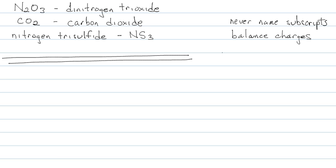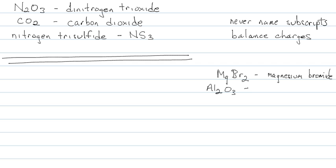So if we have something like MgBr2, first I locate them on the periodic table — we have a metal and a nonmetal, so it's ionic. Never name a subscript: magnesium bromide. Al2O3 — even though it has lots of subscripts, it's a metal and a nonmetal, so it's simply aluminum oxide.